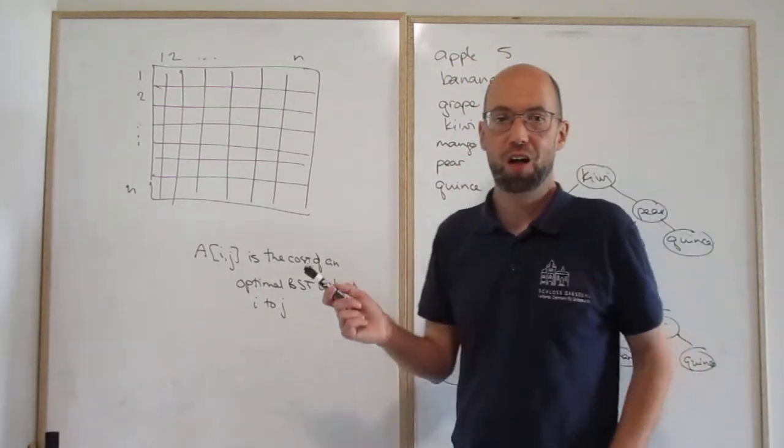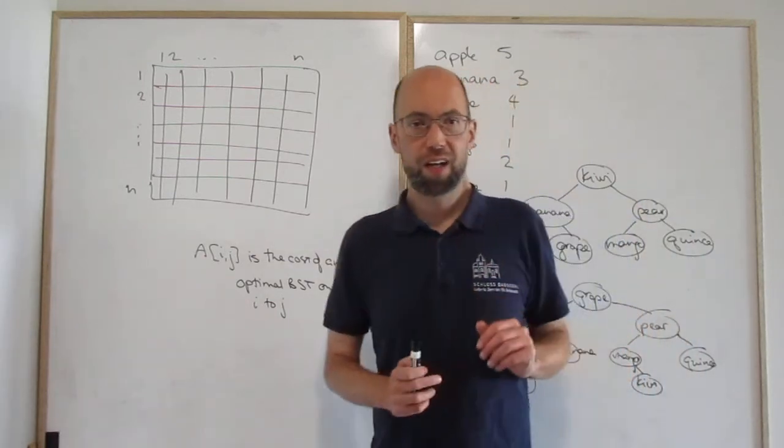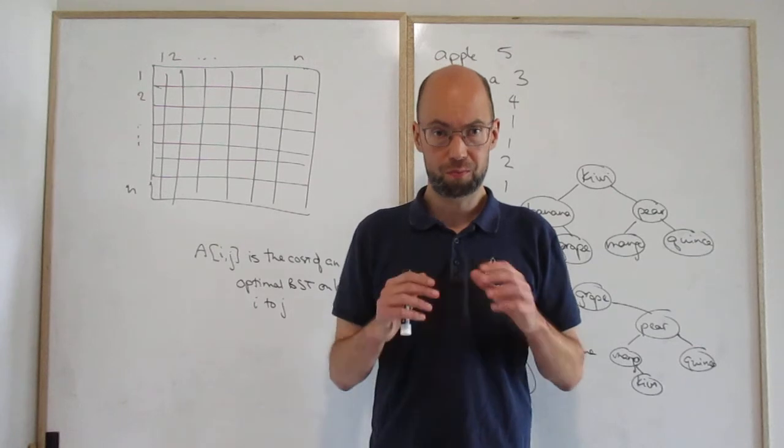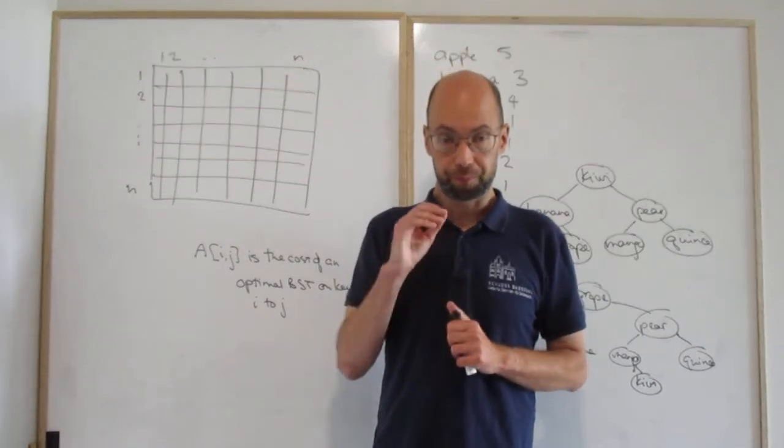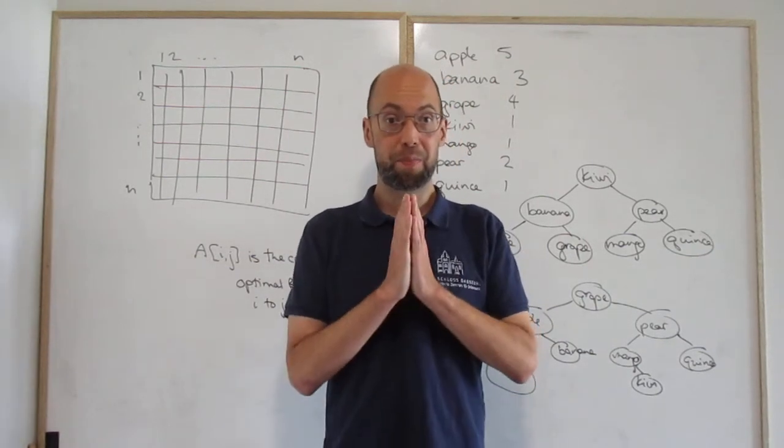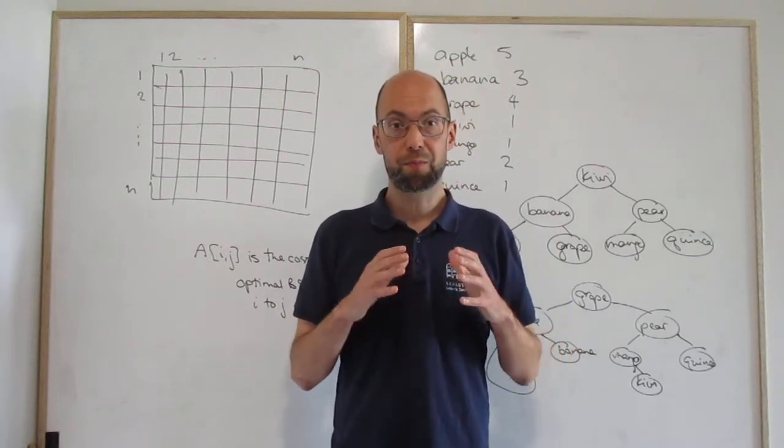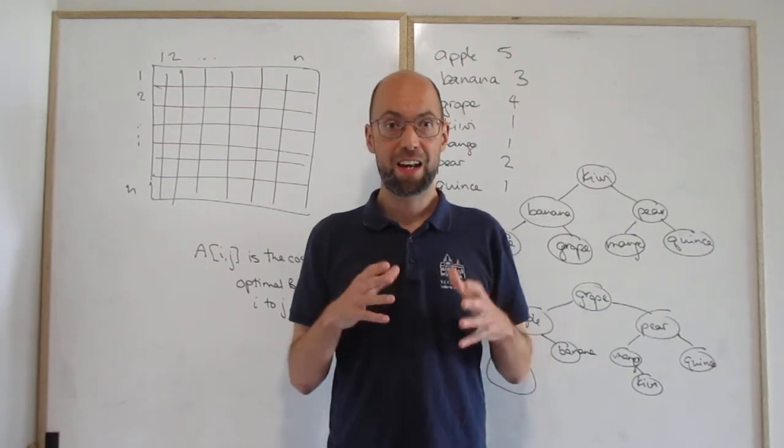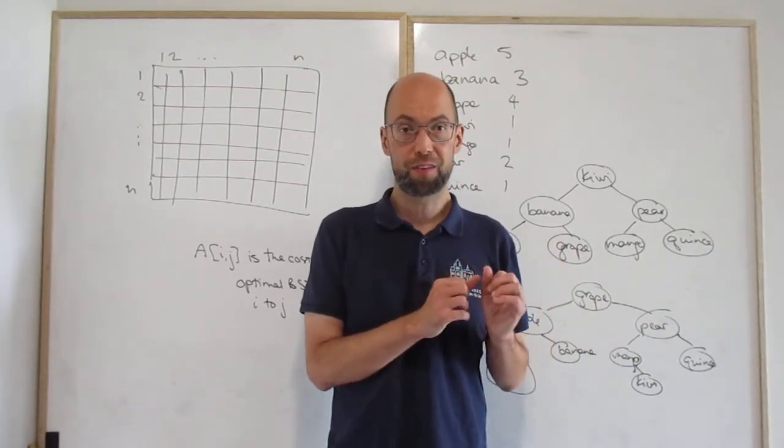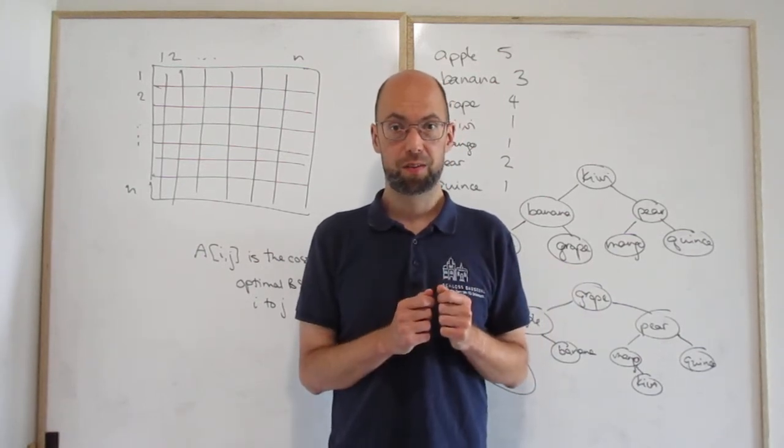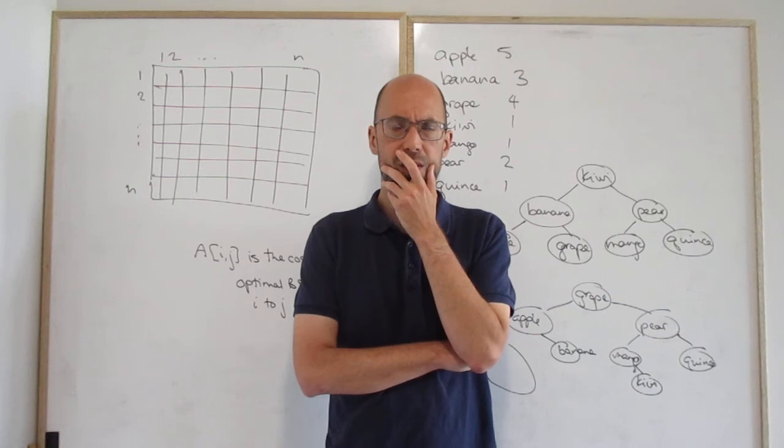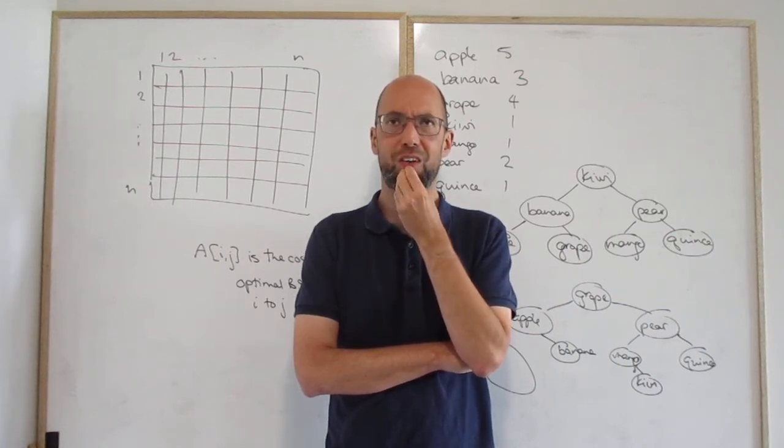The difference is here, we're not going to say for i from one to n, for j from one to n. That doesn't quite work, or maybe there's a way to make it work, but that's not how people usually do it or at least teach it. What we're going to do is think about the size. We're going to say if I'm trying to figure out the best, an optimal tree on ten keys, then I'm going to assume that I have the minimum cost for all of the trees on up to nine keys.